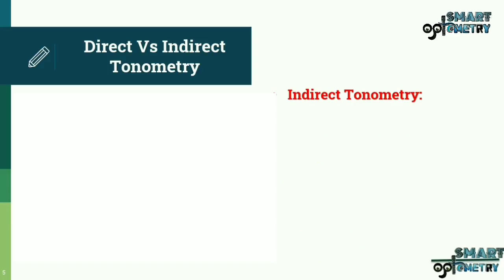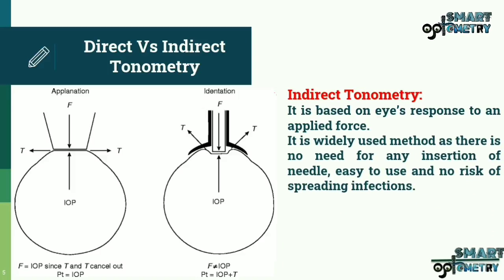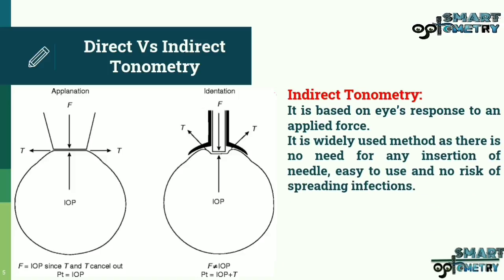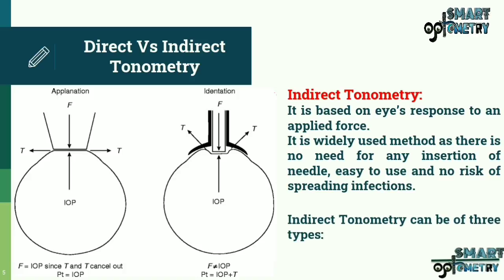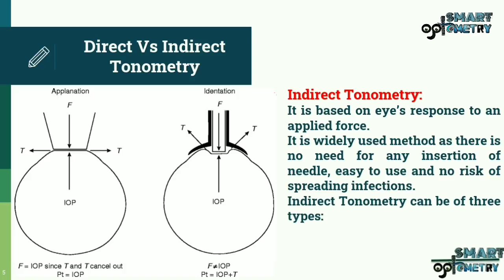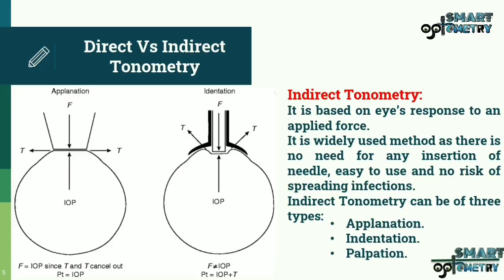Indirect Tonometry is based on the eye's response to an applied force. It is widely used as there is no need for needle insertion, it is easy to use, and there is no risk of spreading infections. Indirect Tonometry can be of three types: Applanation, Indentation, and Palpation.